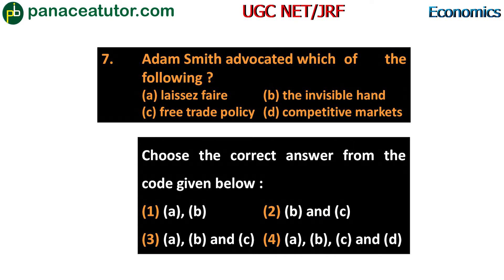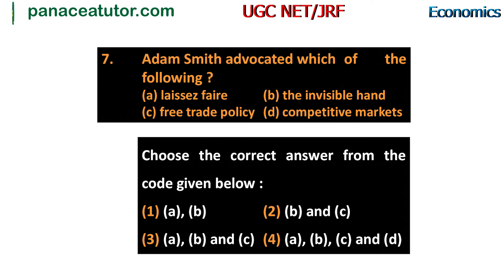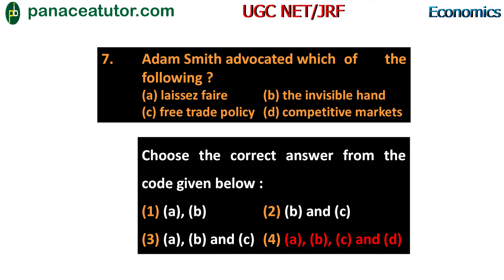Next question asks which things Adam Smith advocates for in his policy. Options: one, A and B; two, B and C; three, A, B and C; four, A, B, C and D - all of the above. The answer is option four - all four are advocated by Adam Smith. Those who have studied Adam Smith well can answer this correctly.